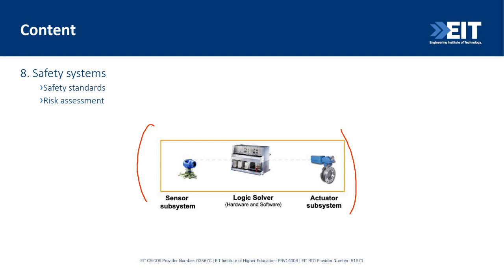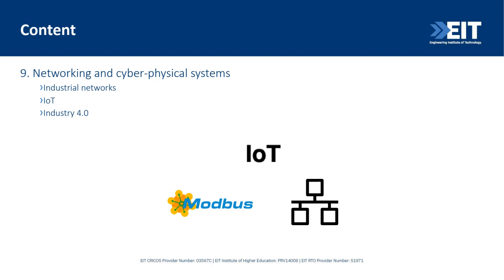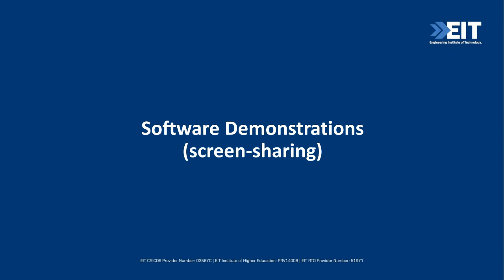Safety systems: in any industrial application there are hazards, and you have to develop safety systems to keep the process safe. These look like control systems but are for safety — they act when everything else fails and protect people. We'll look into safety standards and the concept of risk assessment in industrial applications. Finally, we'll cover the trends of networking and cyber-physical systems — interconnecting different sensors, actuators, controllers, and computers locally and over the internet, including concepts of the Internet of Things and Industry 4.0, where devices in remote locations communicate to control a process.